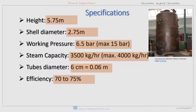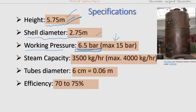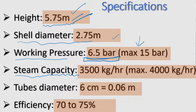Now let us mention some specifications of the Cochrane boiler. Specifications may vary depending upon requirements and specific applications. Generally, the height of the Cochrane boiler is 5.75 meters. The diameter of the cell is 2.75 meters and the working pressure is 6.5 bar, which is why it is called a low pressure boiler — it may go up to 15 bar. The steam production capacity is 3,500 kg per hour, and may be increased up to 4,000 kg per hour. The fire tube diameter is generally 6 cm (0.06 m). The efficiency of the Cochrane boiler ranges from 70 to 75 percent.